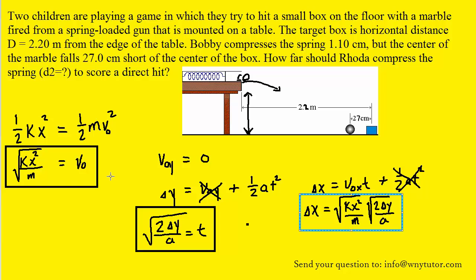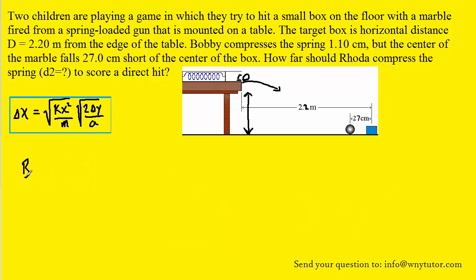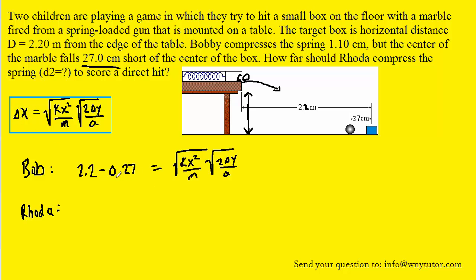Let's clear the workspace to proceed. What we'll do next is set up an equation for the horizontal displacement for both Bobby and for Rhoda. For Bobby, the question states that his marble falls 27 centimeters short of the center of the box, so the horizontal distance his marble travels would be 2.2 meters minus 27 centimeters. Notice we converted the centimeters into meters. Rhoda is the one who actually hits the box, so her marble's horizontal displacement will be the full 2.2 meters.